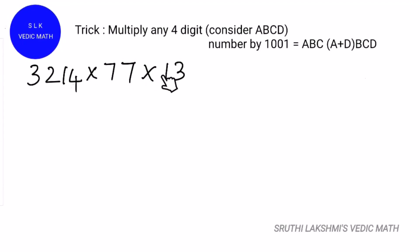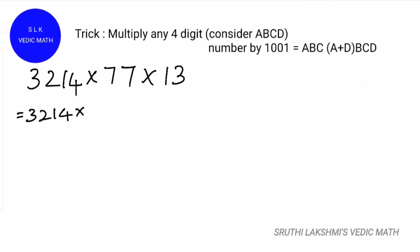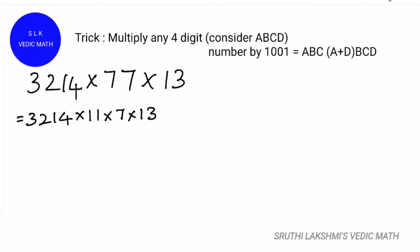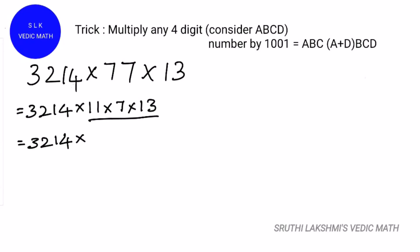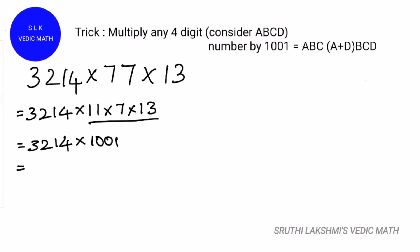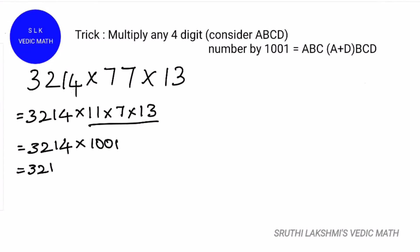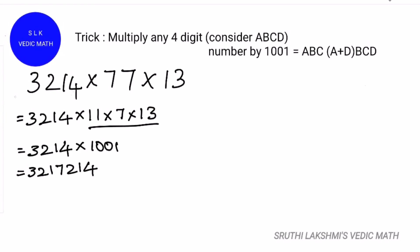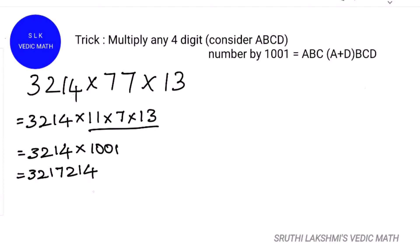Let's try an example: 3214 into 77 into 13. This can be written as 3214 into 11 into 7 into 13, since 7 into 11 into 13 is 1001. So it's 3214 into 1001. First, write the first three digits: 3, 2, 1. Next, add the first and the last digit: 3 plus 4 is 7. Then write the last three digits: 2, 1, 4. So, 3214 into 77 into 13 is 3,217,214. Thanks for watching.